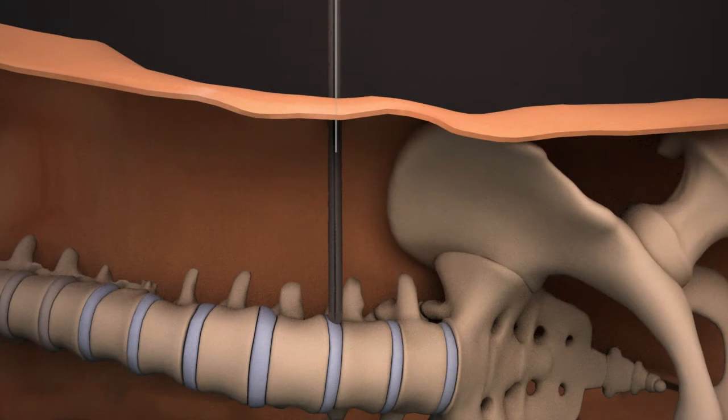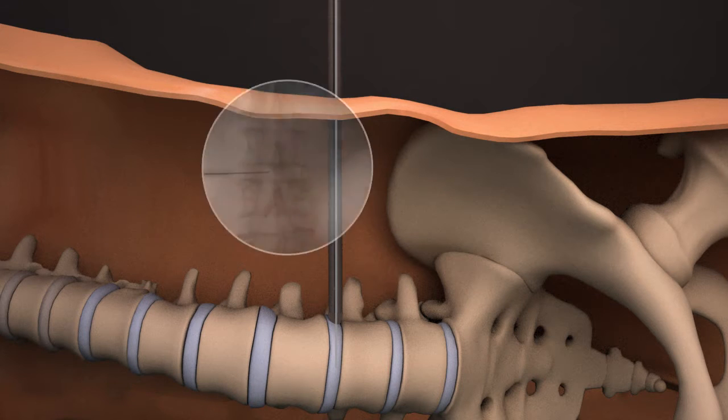Insert a K wire through the initial dilator into the disc space to hold the dilator's position. The K wire should be placed approximately halfway across the disc space. Confirm with AP fluoroscopy.